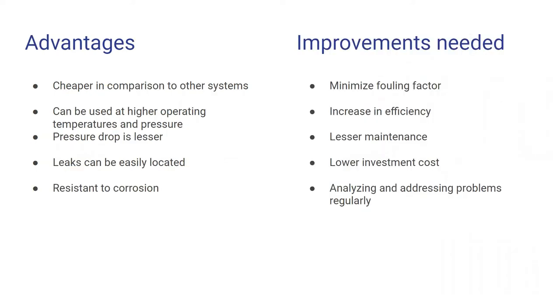Now let us look into some advantages that heat exchangers have over other devices that are used in industries. Firstly, they are cheaper in comparison to other systems. They can be used at high operating temperatures and pressures. Pressure drop is lesser. Leaks that are there in the tubes can be easily located in a heat exchanger, unlike other systems that are generally used and also it is resistant to corrosion.